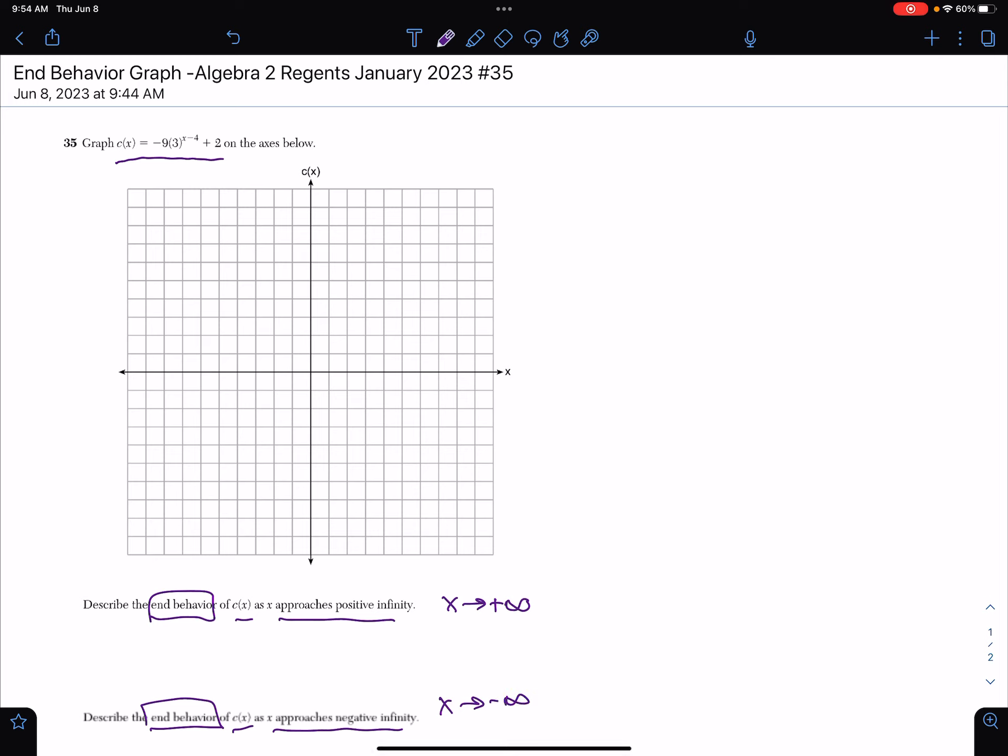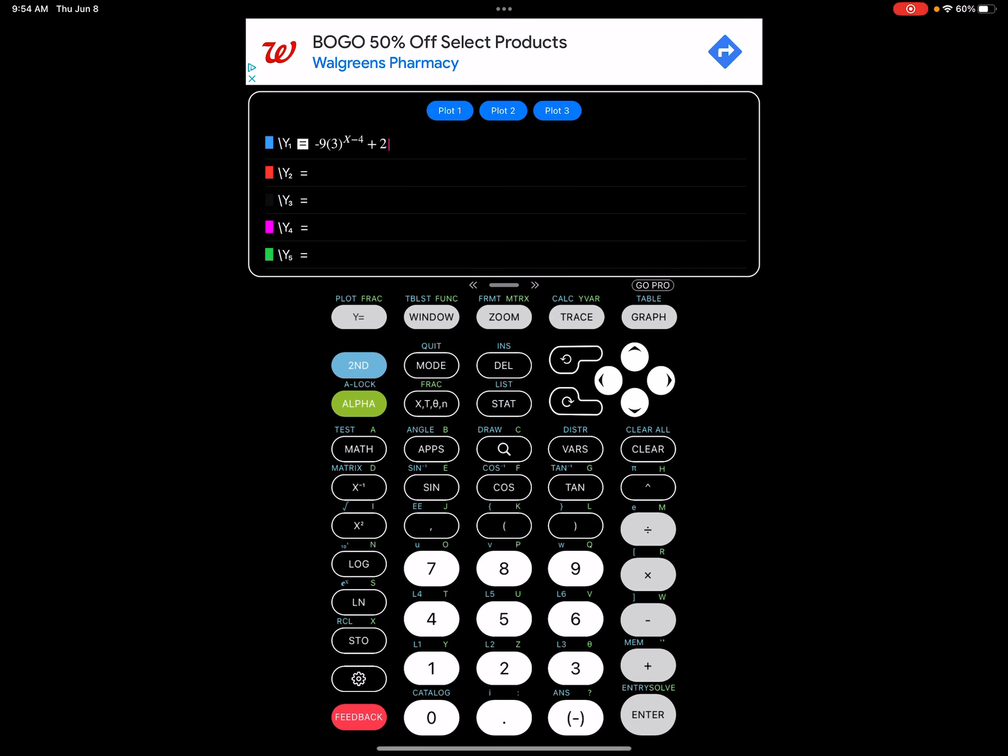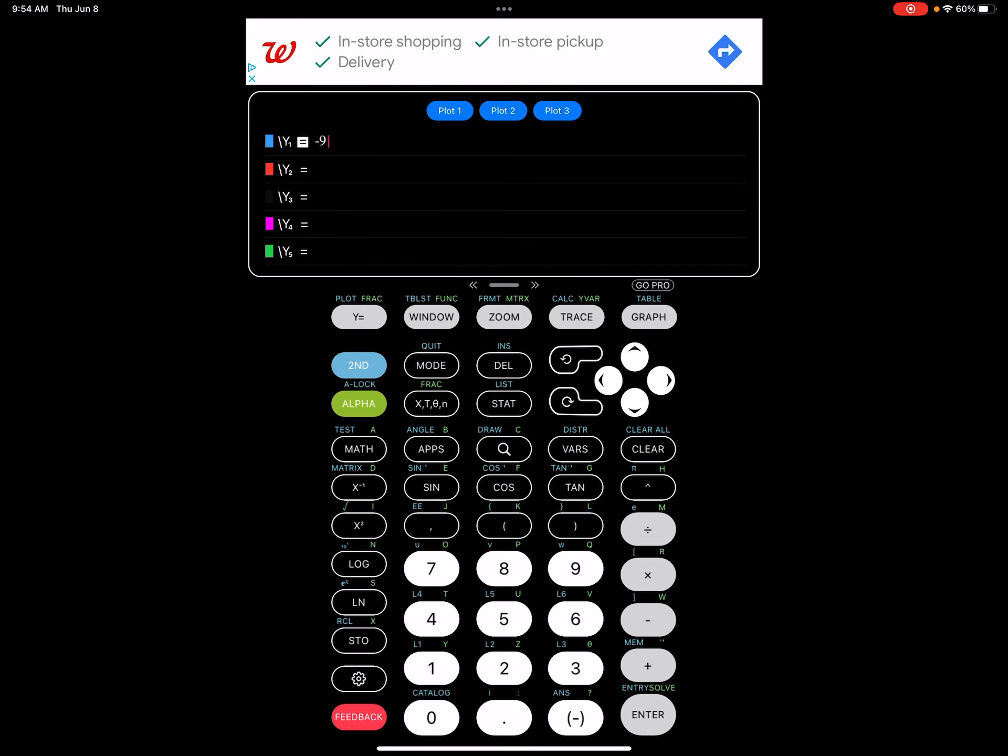So what we're going to do is, first of all, just put this in the calculator. Because whenever we see c as a function of x, this is another way of saying y. So let's go ahead and put that in the calculator.